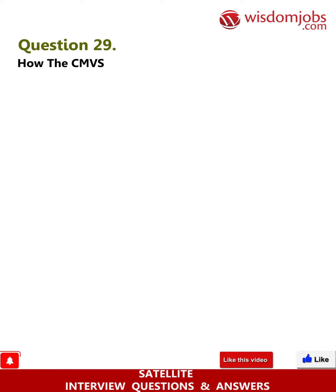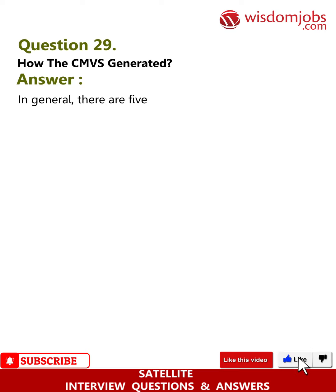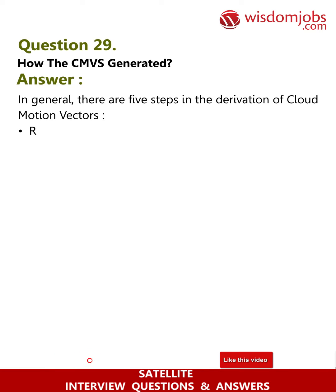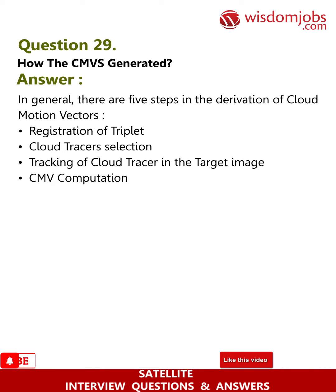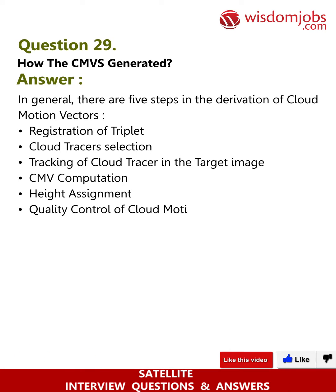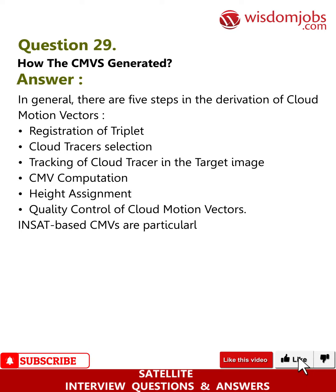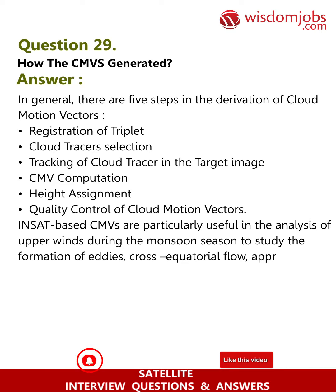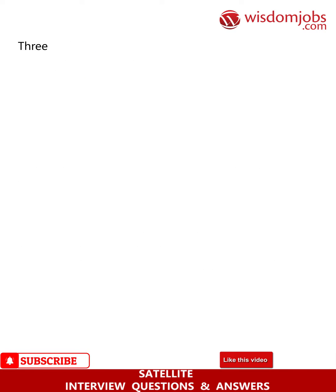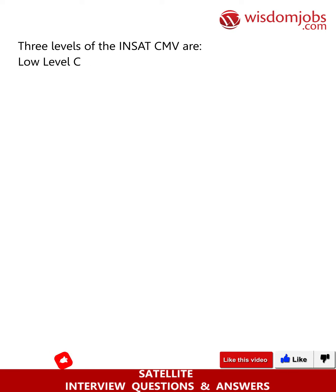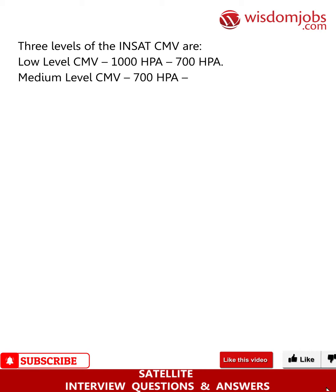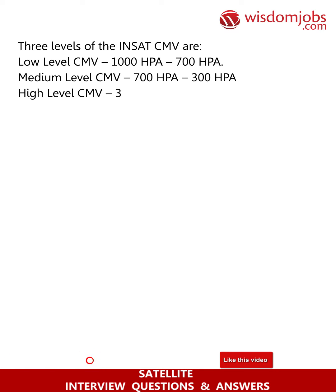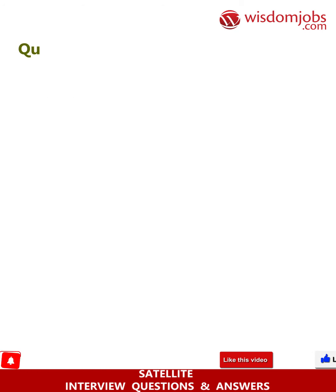Question 29: How are Cloud Motion Vectors (CMVs) generated? There are five steps in the derivation of CMVs: registration of triplet, cloud tracer selection, tracking of cloud tracer in the target image, CMV computation, height assignment, and quality control. INSAT-based CMVs are particularly useful in the analysis of upper winds during the monsoon season to study formation of eddies, cross-equatorial flow, and approach of the two separate branches of the monsoon. Three levels of INSAT CMV are produced: low-level CMV (1000 hPa to 700 hPa), medium-level CMV (700 hPa to 300 hPa), and high-level CMV (300 hPa and above).